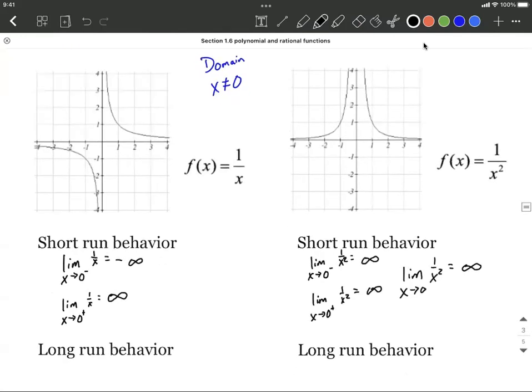All right next, long run behavior. Long run behavior is what happens at the extremes as we go way off to the left and way off to the right. Now on both these graphs they kind of do the same thing. This one's above the x-axis, this one's below the x-axis, but they're kind of going the same place.